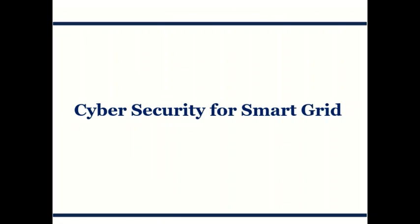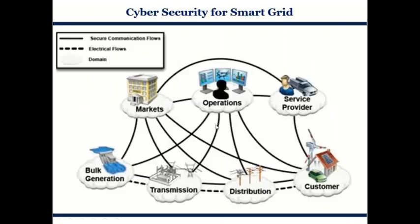Let's move on to the next topic, which is cyber security for smart grid. Here we can see a basic architecture model of the smart grid as it is prevalent right now. The dashed line represents the electrical flow, whereas the thick or non-dotted line shows the communication flow.